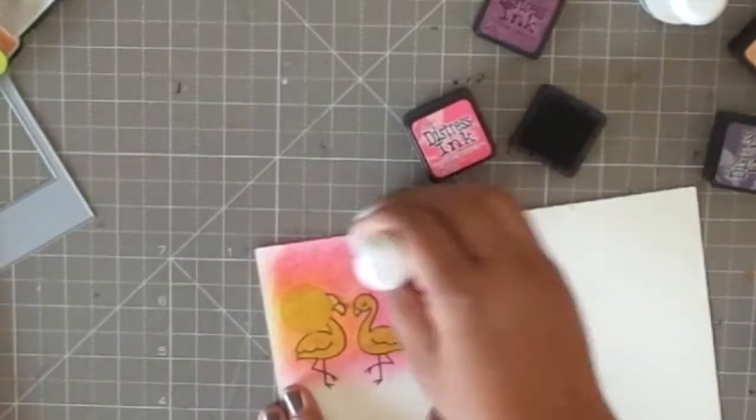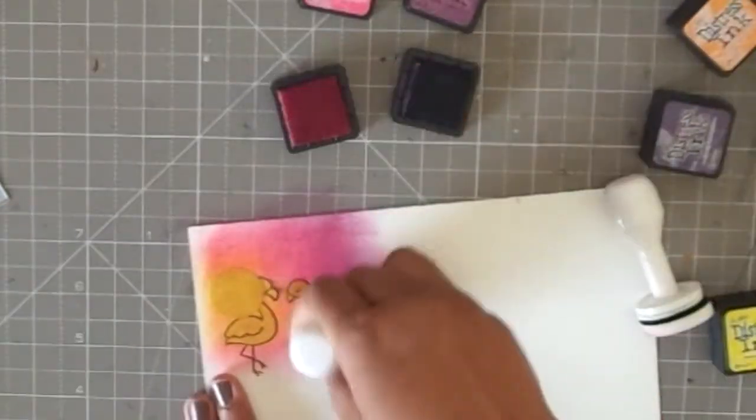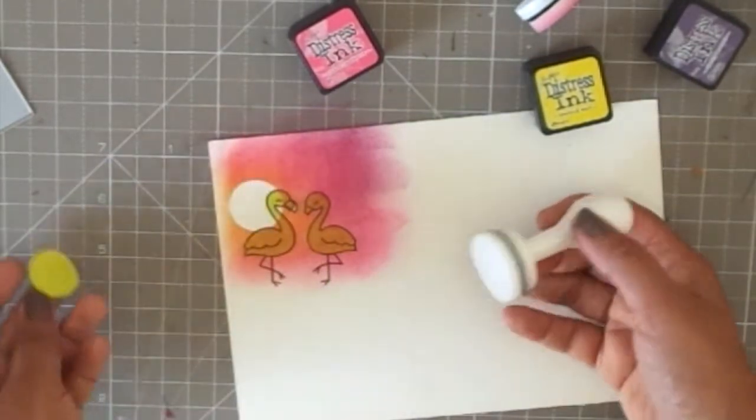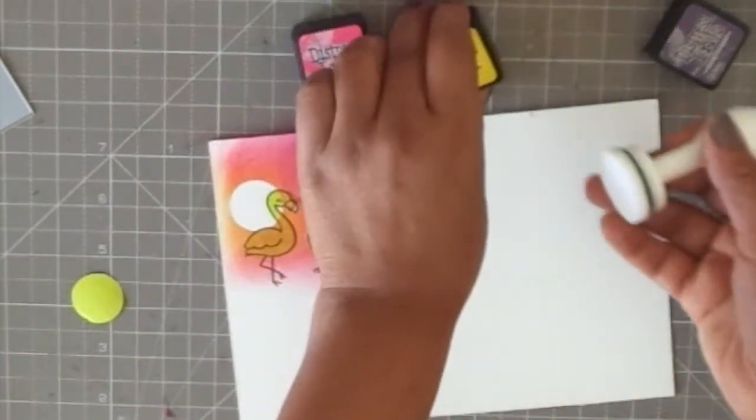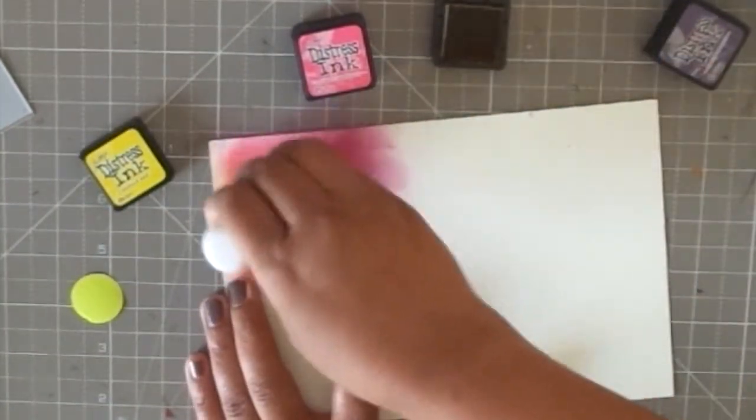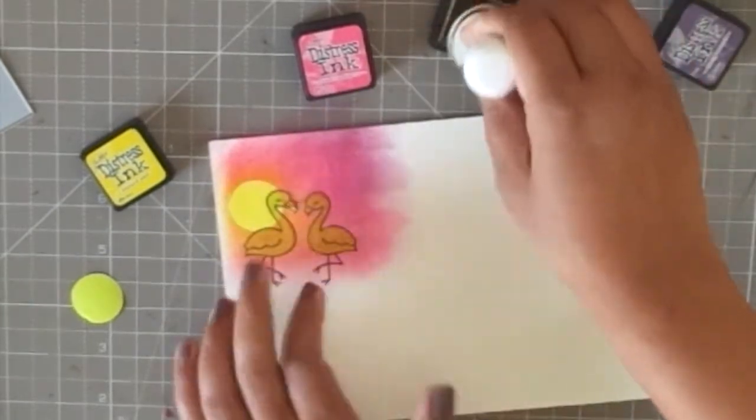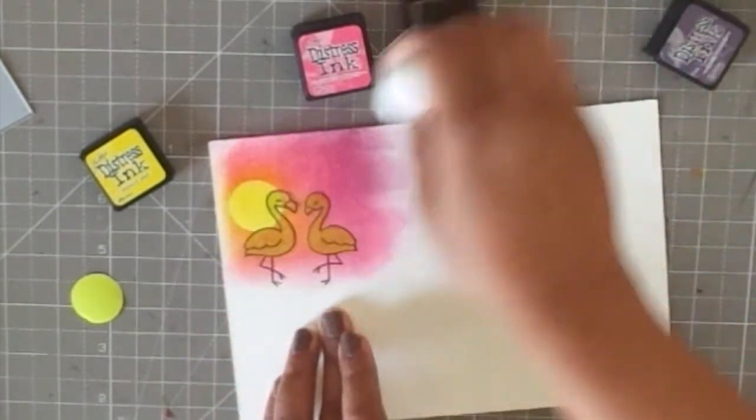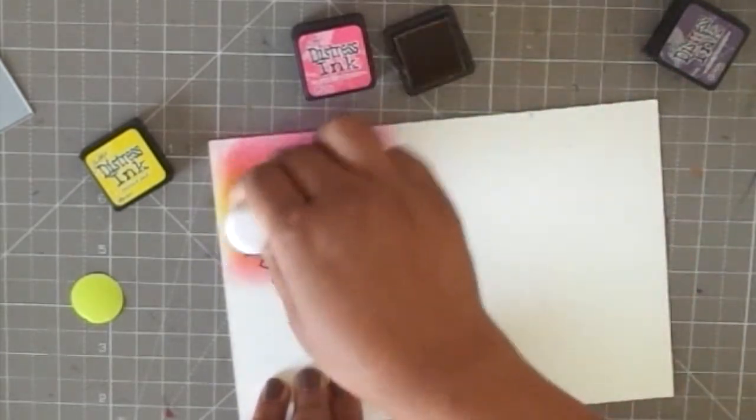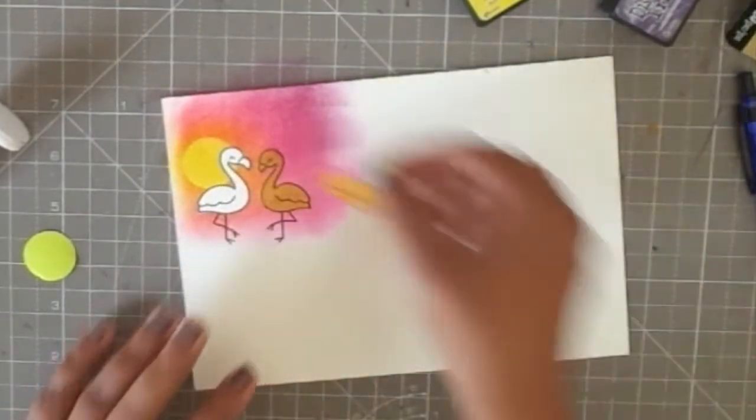Once I have done that, I'm using a shade of purple, seedless preserves I think it's called. I will list down all the details in the description box on the products I've used. Once I have the background, I removed the first mask of the sun and I'm adding some yellow using the mustard seed distress ink. You can see that sunny glow and then the orange and then blending it outwards towards the horizon with the pinks and purples.